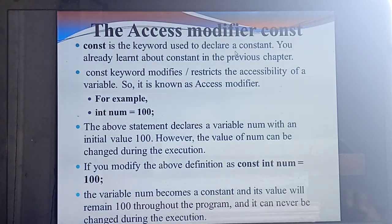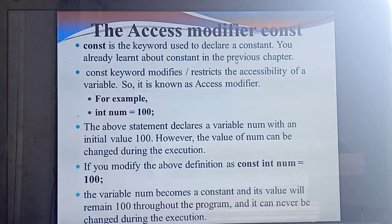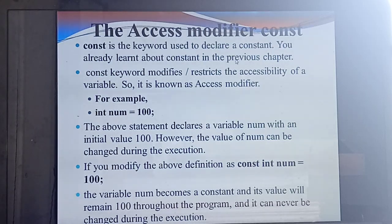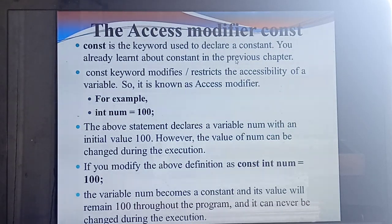Already you have studied about constant — in mathematics also, you have studied constant values. Likewise, here also a word const means it represents constant. Mainly, why you are using the word const: to reduce the accessibility of a variable. What do you mean by accessibility? Accessing — where you need to access the variable, where you need to take the value. We are calling this an access modifier. Access modifier is mainly used to restrict the accessibility of a variable.